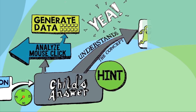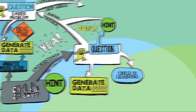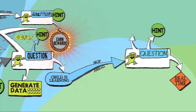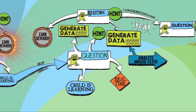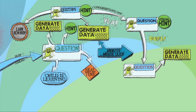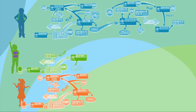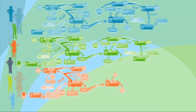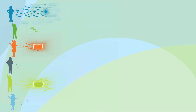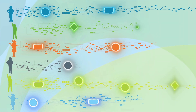DreamBox measures how students are thinking within the lessons, constantly individualizing what each student sees next. In fact, as a single student works on DreamBox for one minute, the program collects, analyzes, and responds to over 800 pieces of information about that student and how they learn. That's 48,000 pieces of data every hour, providing the most personalized learning experience possible.